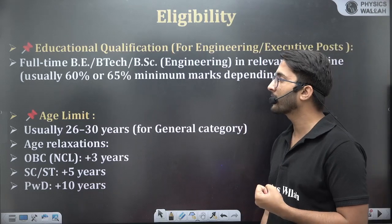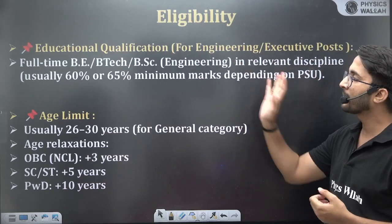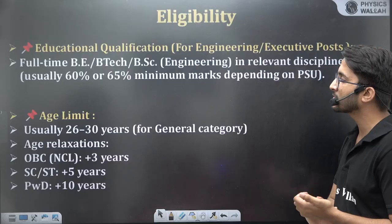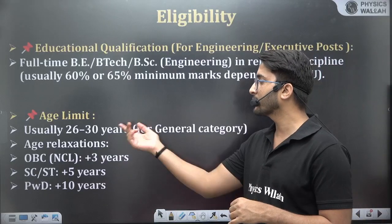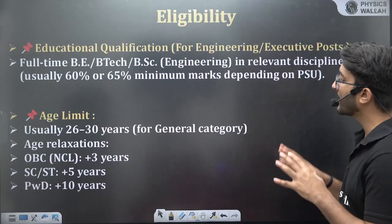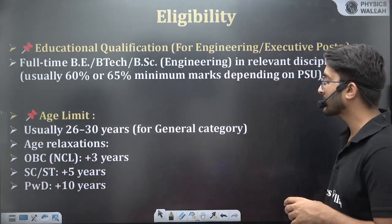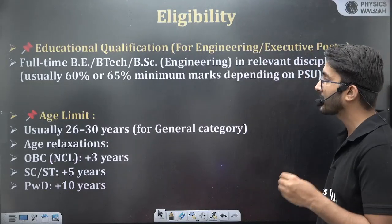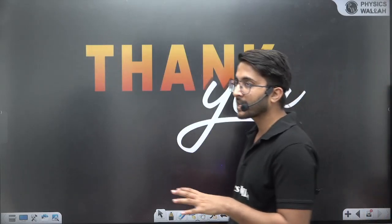Regarding eligibility for different PSUs — both with GATE and without GATE — a minimum of 60 to 65 percent marks is usually required. The age limit is typically 26 to 30 years, depending on the PSU. Students from reserved categories will also receive applicable age relaxations and other benefits.